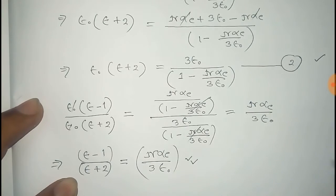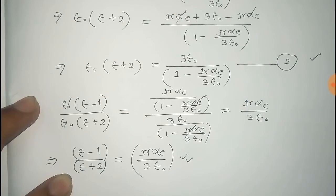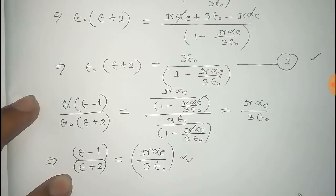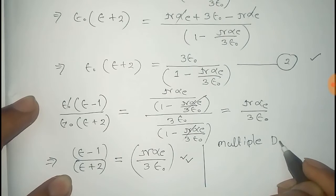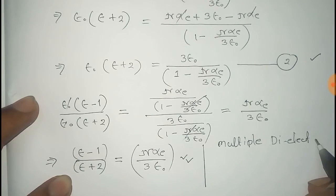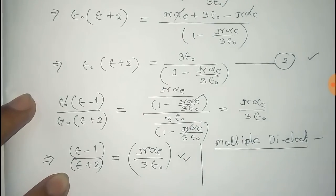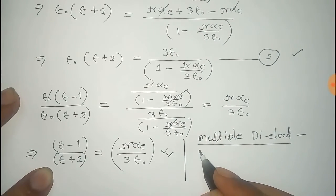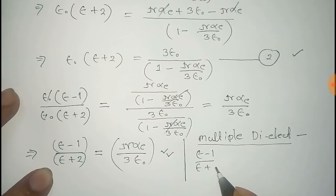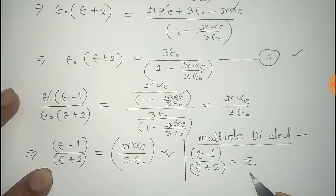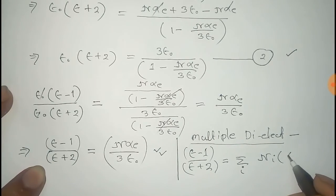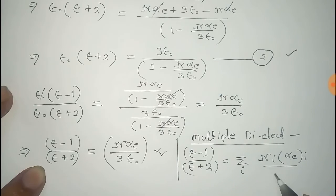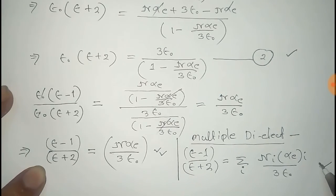If we extend the system to a multiple dielectric medium, the Clausius-Mossotti relation changes. The left-hand side remains the same: (ε − 1) divided by (ε + 2). But on the right-hand side, there will be a summation over i of N_i times α_ei. This is the Clausius-Mossotti relation for multiple dielectric media.